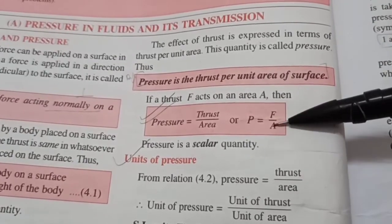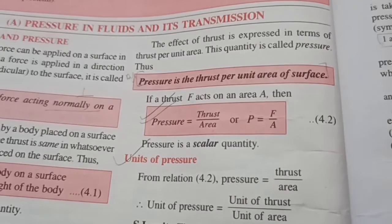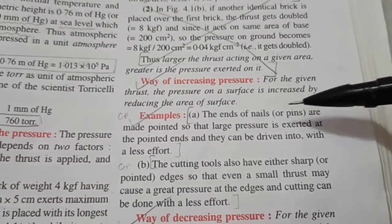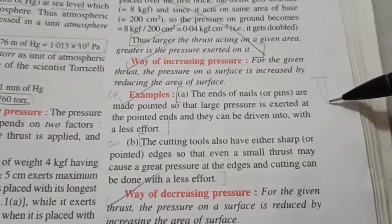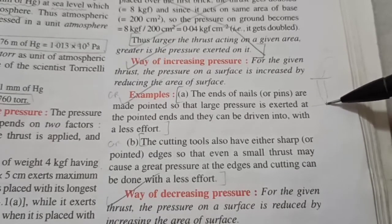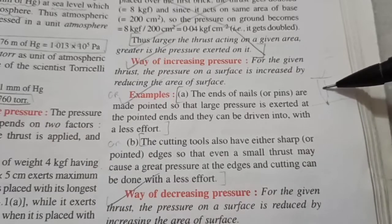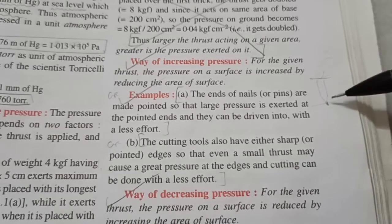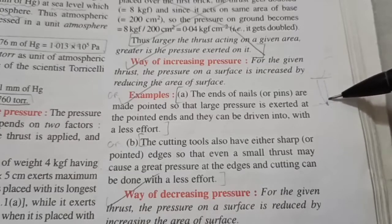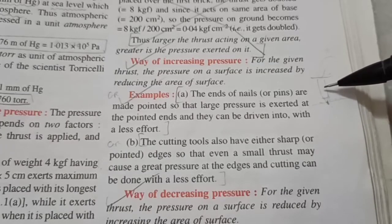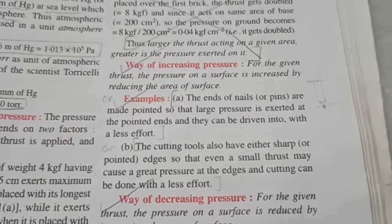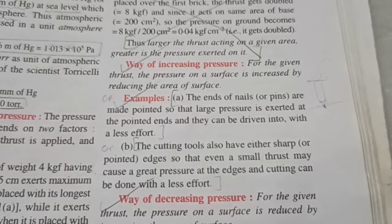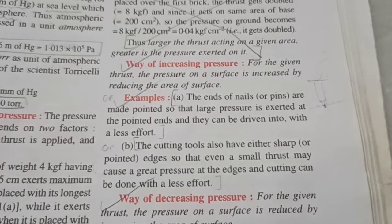And the opposite is also true. If you increase the area of contact, then the pressure will decrease. There are some applications for this. For example, the nail's ends are always pointed. Because when you hit this nail with a hammer on its head, the entire force is now concentrated onto such a small area. So, the pressure is immense on the wooden block at this point. And the nail will be driven inside the wooden block. Similarly, cutting tools like knives and scissors have very sharp edges. Because sharp edges means that would provide a very small area of contact with the paper or cloth. So, there will be greater pressure. And it will be easy for us to cut it with minimum effort.